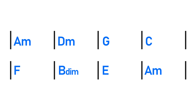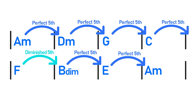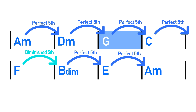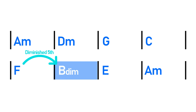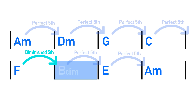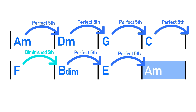So in our circle of fifths progression, almost every chord change is the movement of a perfect fifth, which makes every chord change sound very natural, very logical, and satisfying. I say almost every chord change because there is actually one chord change that's not a perfect fifth — it's actually a diminished fifth — but we'll talk more about why that's there later.